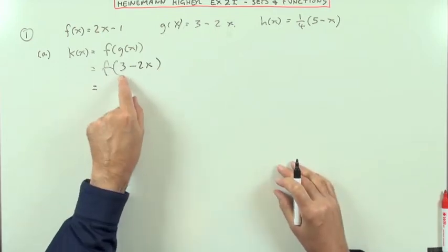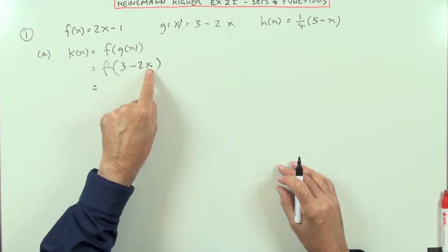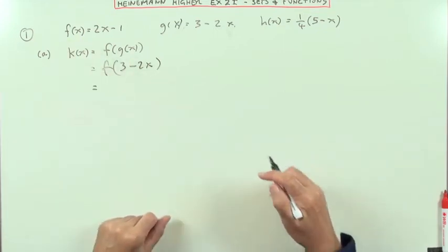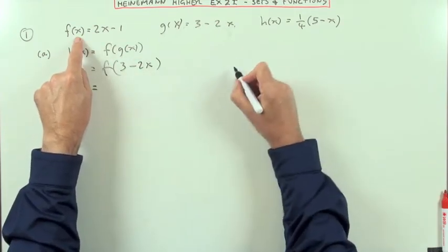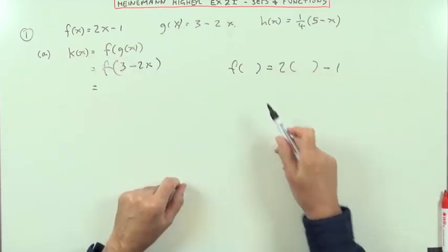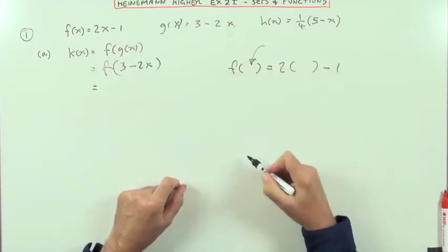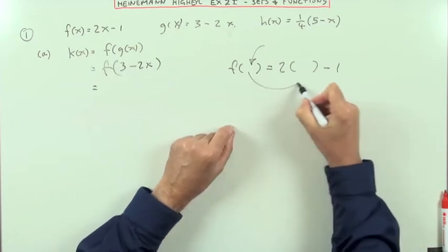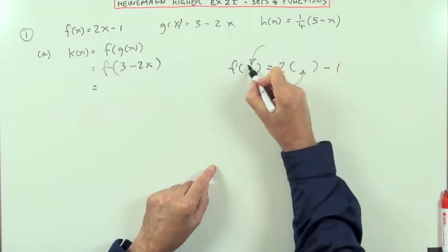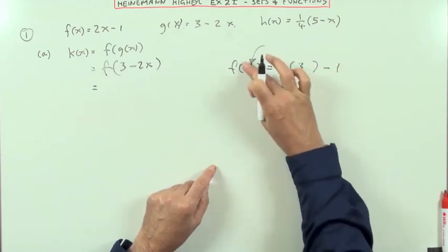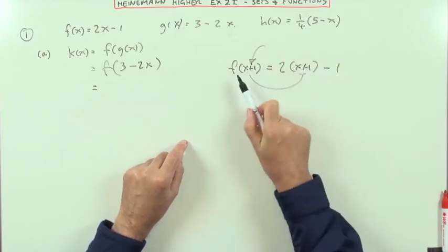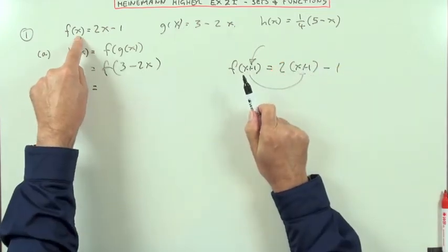And then f comes along and acts on this. Don't get confused by that single x. What this says up here is whatever f acts on, it does two times the thing it acts on minus one, no matter what you pop in there. Whether it's just an x, whether it's a number like three, two times three, or whether it's an expression like x plus one. That's just an example of what this calculation does.